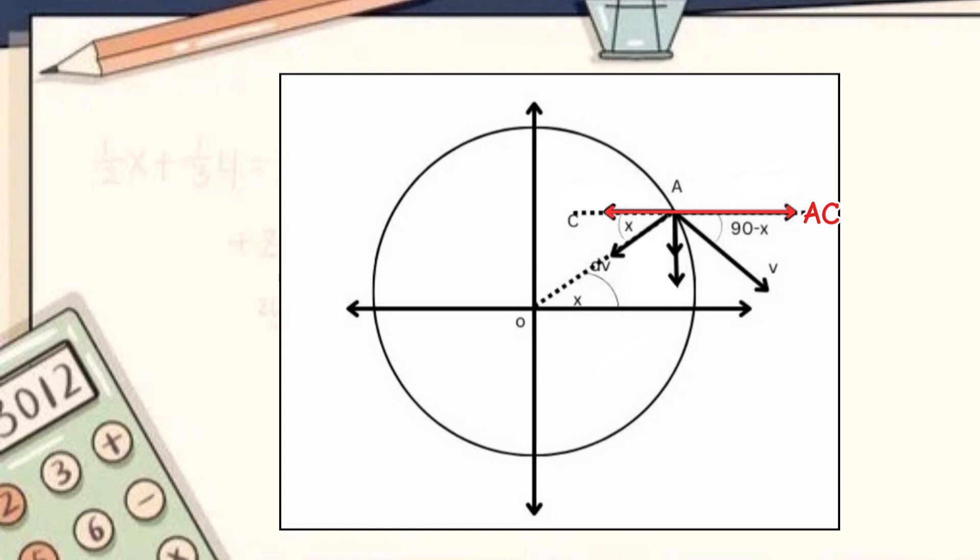So as AC is parallel to x-axis, and we know alternate angles are equal. So angle CAO is equal to x. As radius is perpendicular to velocity vector, we can write angle velocity vector makes with x-axis as 90 minus x degrees.